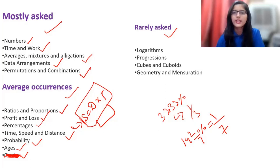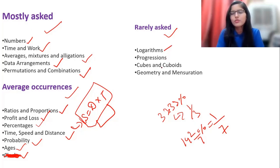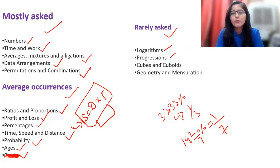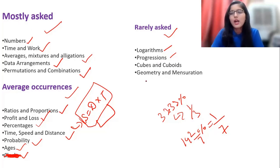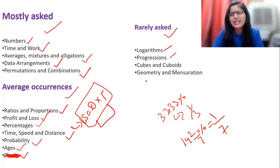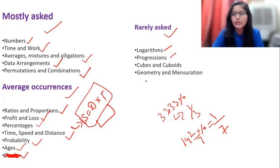For rarely asked topics: Logarithm is rarely asked but make sure you're aware of the formulas - if they ask any question it will be formula-based only. Arithmetic Progression and other progressions were previously asked but according to new analysis, they are really rarely asking progression questions now. Cubes and Cubes is also a rarely asked topic, and the same applies to Geometry and Mensuration as well.